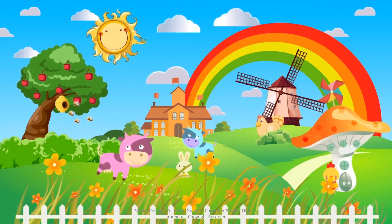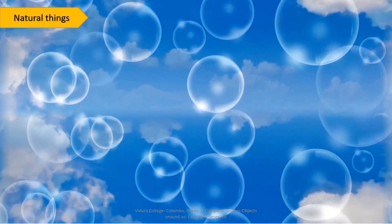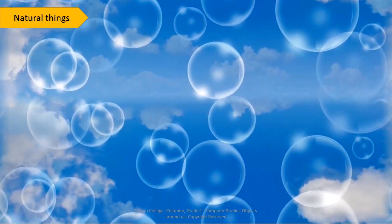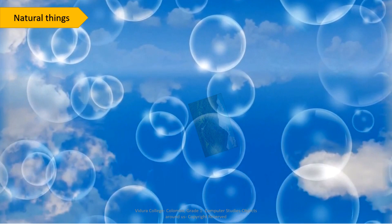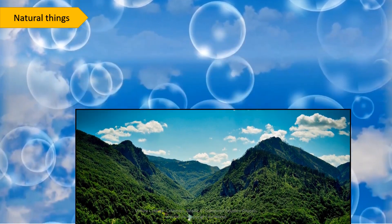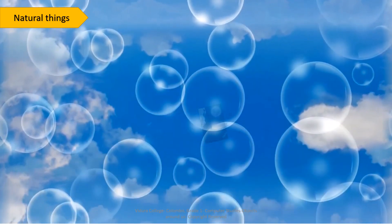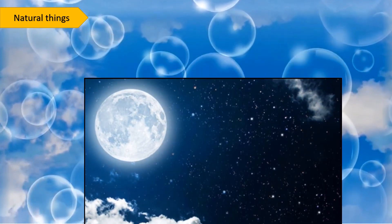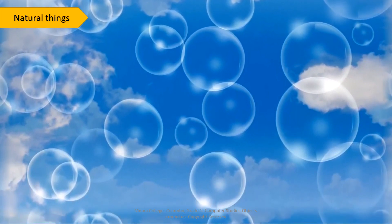So children, things we see around us are divided into two types: natural things and man-made things. Natural things — we see beautiful beaches, mountains, sun, moon and many more. They are naturally present in the world.